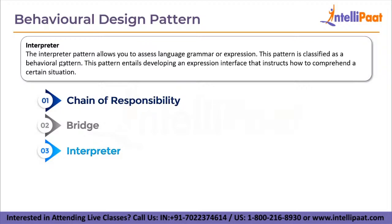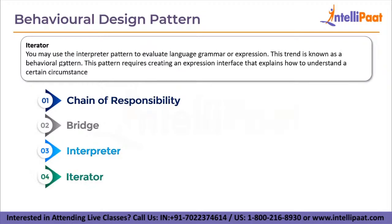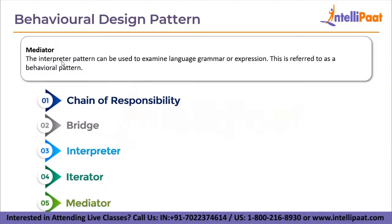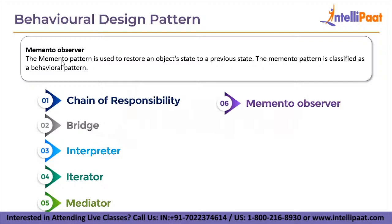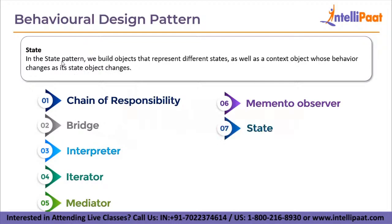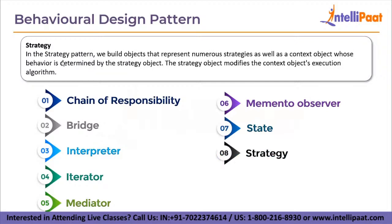The interpreter pattern allows you to access language grammar or expression by developing an expression interface that instructs how to comprehend a certain situation. The iterator pattern similarly requires creating an expression interface that explains how to understand a certain circumstance. The mediator pattern can be used to examine language grammar or expression. The memento pattern is used to restore an object's state to a previous state. In the state pattern, objects representing different states are built, and a context object's behavior changes as its state object changes.